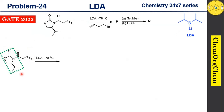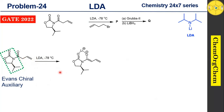Now let's look at our substrate. This particular part is called Evans chiral auxiliary — a powerful tool in asymmetric synthesis providing high diastereoselectivity in various transformations. The isopropyl group acts as a stereo-controlling unit. When you use LDA, it readily abstracts the proton from the alpha position, producing the corresponding enolate ion, where the negative charge on oxygen coordinates with the lithium cation, and the carbonyl oxygen also coordinates with lithium, making the structure a rigid chelated form.